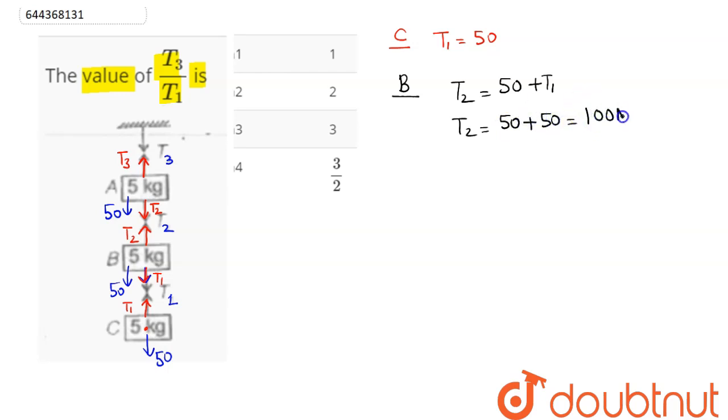So for A block we can see T3 comes as 50 plus T2. So this comes as 50 plus T2, which is 100. Hence this comes as T3 is equal to 150 Newton.